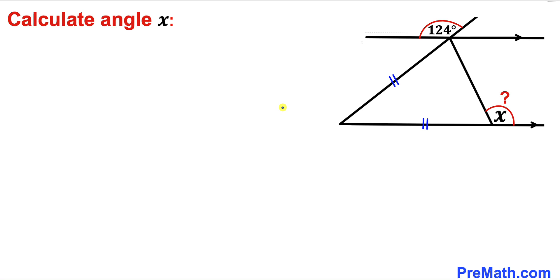Welcome to PreMath. In this video, we have an isosceles triangle positioned between two parallel lines, as shown in the diagram. This angle is 124 degrees, and we're going to calculate angle x.